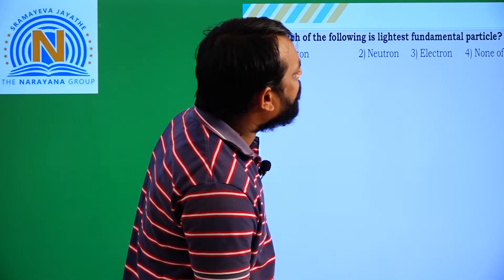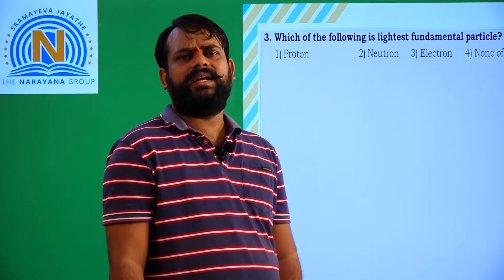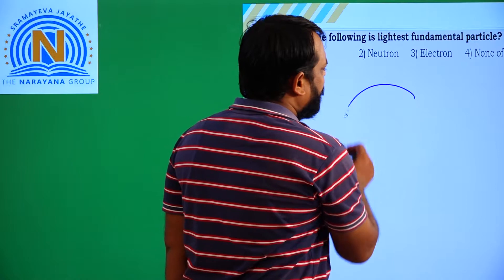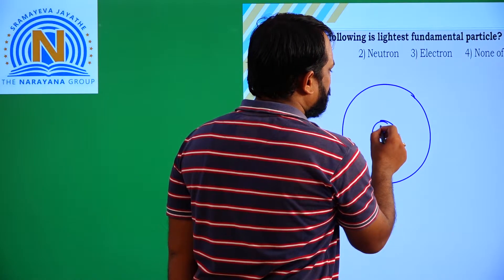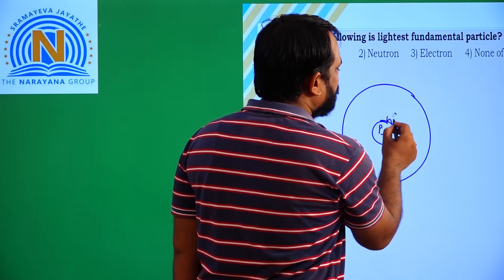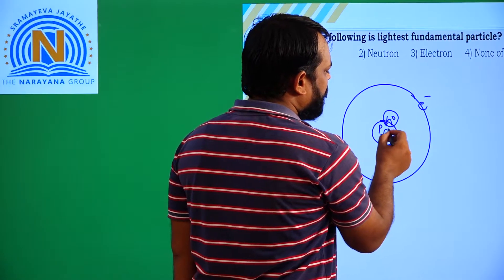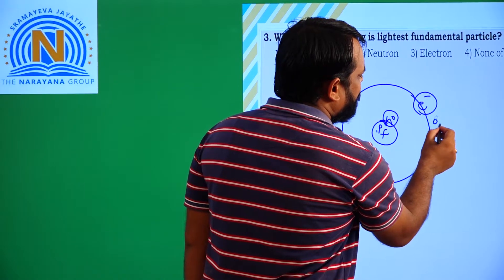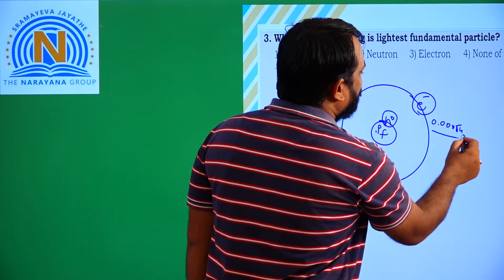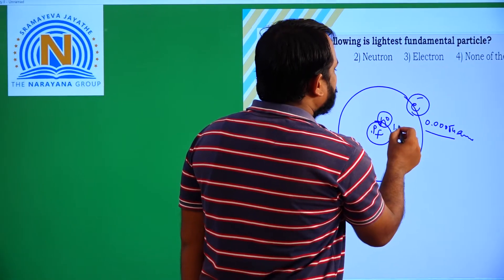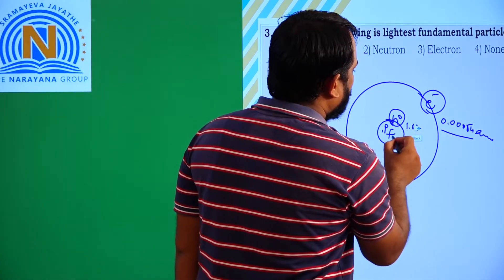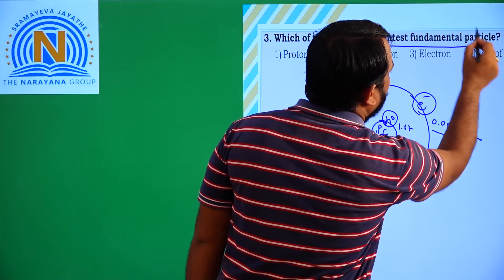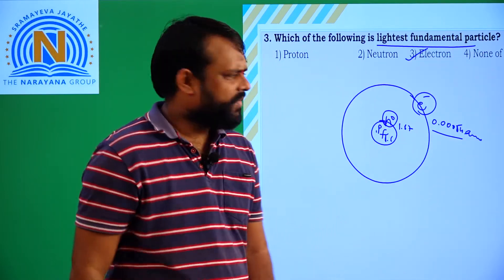Which of the following is lightest fundamental particle? As you know that the mass of the electron is very low. Here if you take, for example, the nucleus, there is a positive charge proton and neutral charge neutron and electron. Here almost the neutron has more size, that means more mass, followed by proton, but the lightest particle is electron. Here the mass is 0.0054, that means very less when compared to here 1.67 and here 1.6, that means almost these are heavier than electron. So the lightest fundamental particle is electron. Which option? Third option.